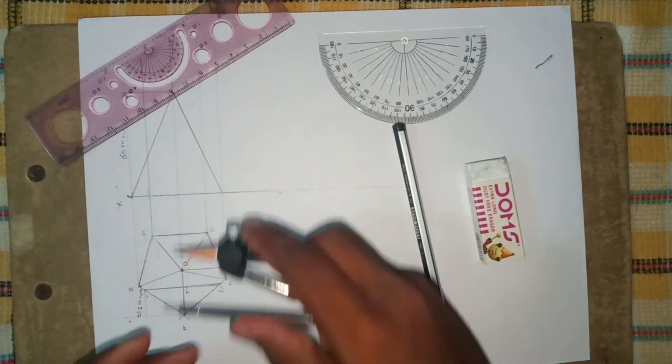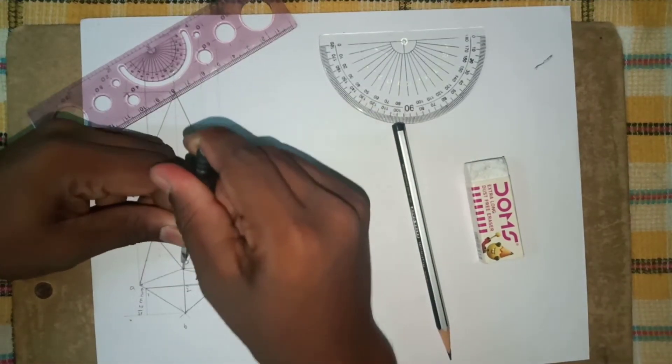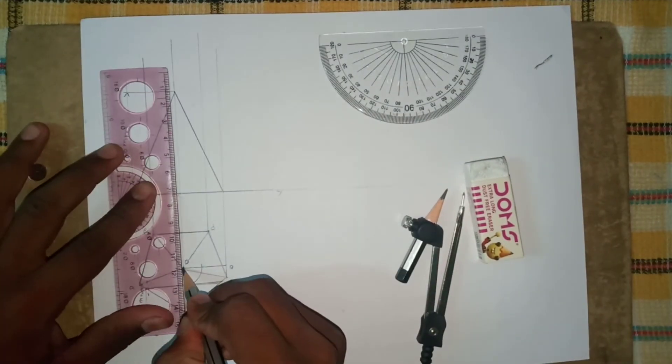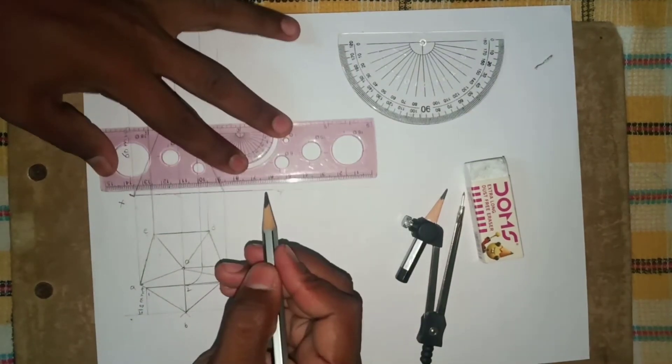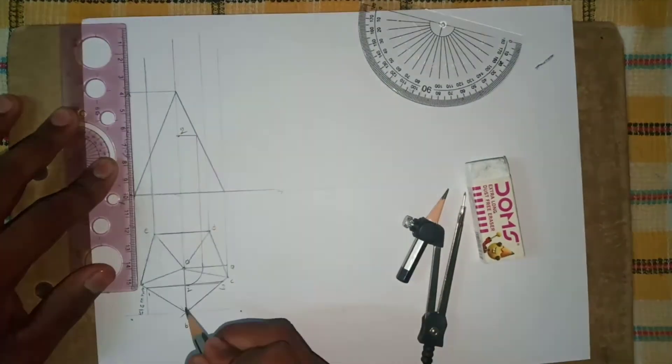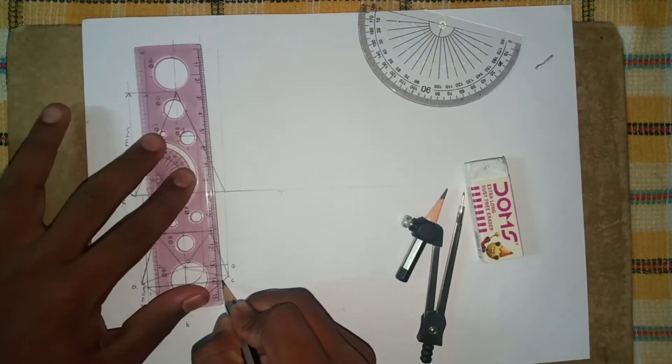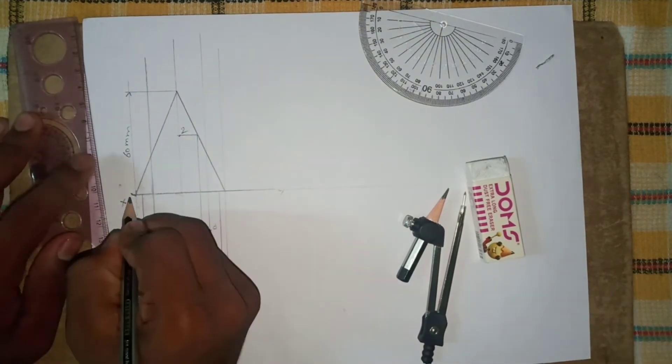This is the OQ. Take O to radius, draw an arc which cutting OQ. Project the line which cutting point to front view like this. And take a center like this and take a center like this. This is the two point which is shown in top view.